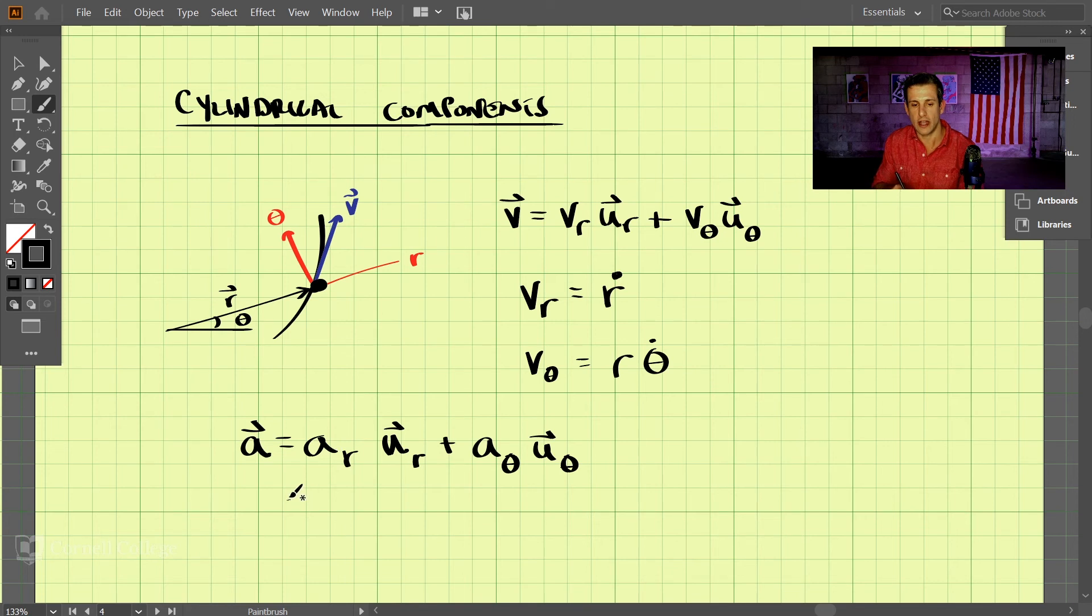So what does aR equal? aR is equal to R double dot, so the second derivative of the radius, minus R theta dot squared.